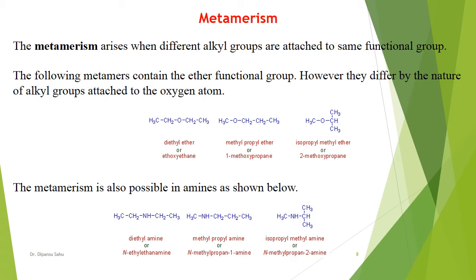Metamerism generally arises due to the unequal distribution of alkyl groups or different alkyl groups attached to the same functional group. For example, diethyl ether has two ethyl groups (two carbons each side), while methyl propyl ether has methyl and propyl groups — still four carbons total, but distributed one plus three. This unequal distribution in the same functional group is known as metamerism. Metamerism is also possible in amines, such as diethylamine versus methyl propyl amine.